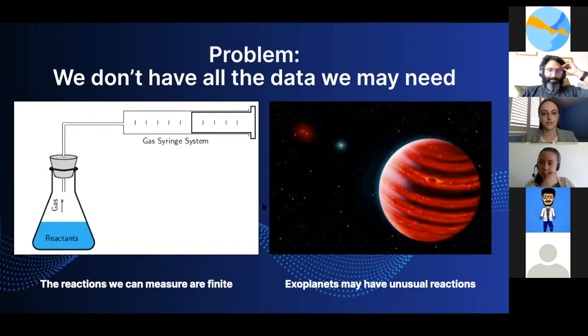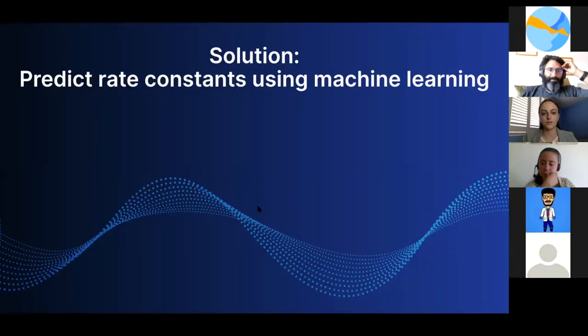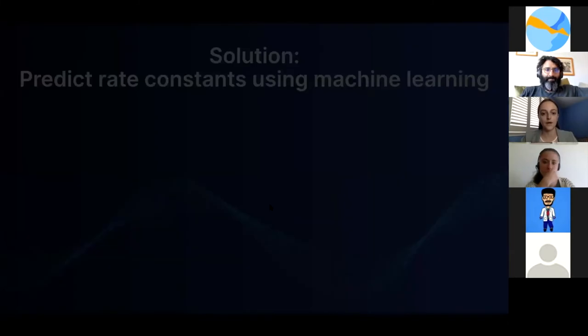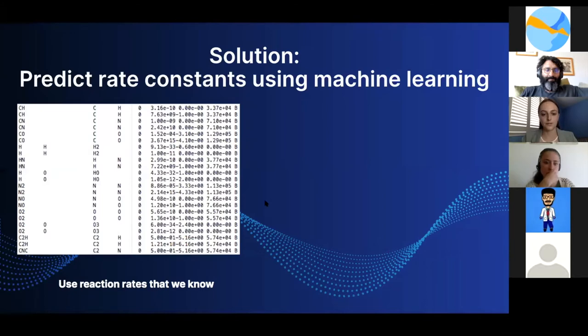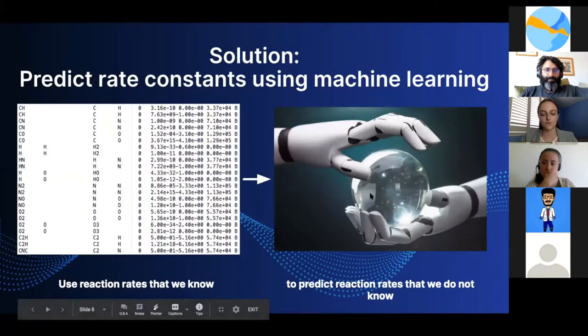So my project is a solution to this data problem: to predict reaction rate constants using machine learning. This isn't a replacement for actual data, but these predicted constants can help point us in the right direction of what might be worth looking into more. First we use reaction rates that we know, then give those to an algorithm to predict reaction rates we do not know.